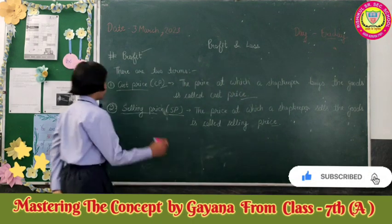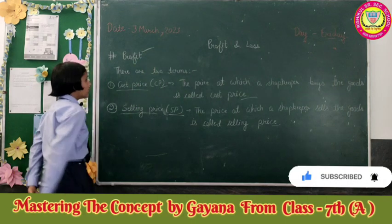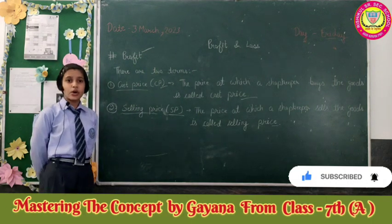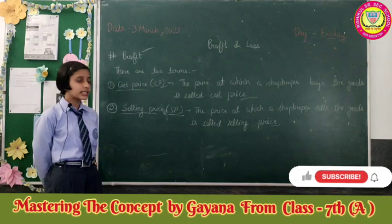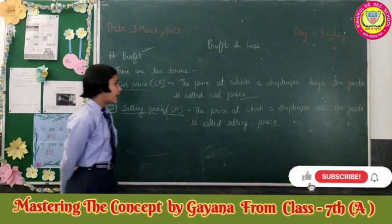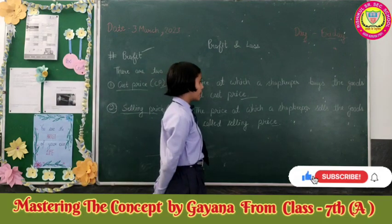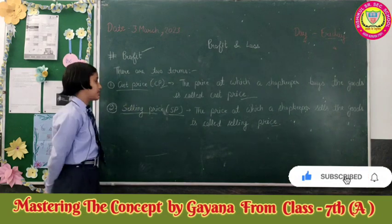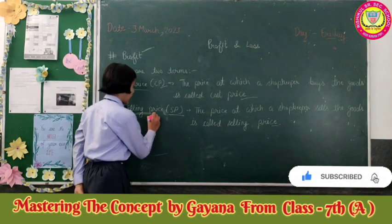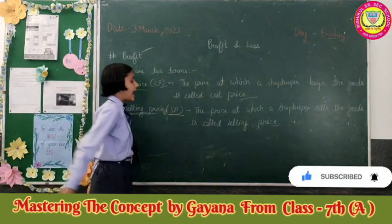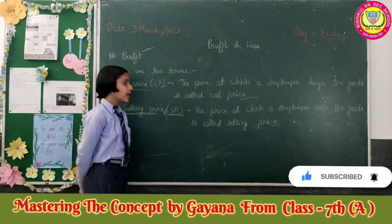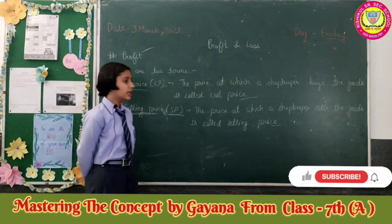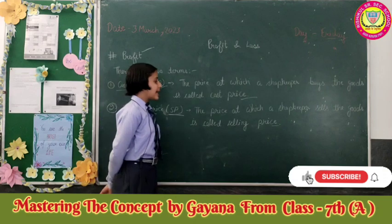Firstly, we will read about Profit. There are two terms. First is Cost Price, which is denoted by CP. The price at which a shopkeeper buys the goods is called Cost Price. Second is Selling Price, which is denoted by SP. The price at which a shopkeeper sells the goods is called Selling Price.